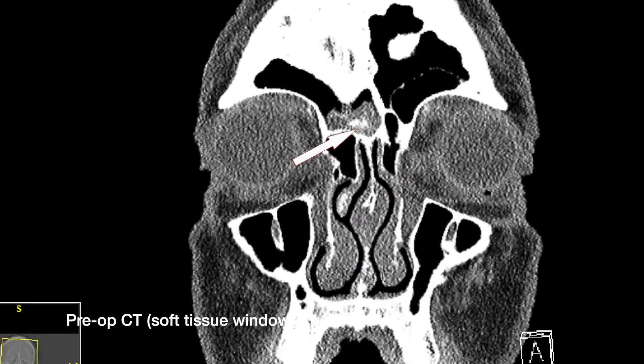Hyperdensities in fungus balls are a result of iron, magnesium, and manganese from the presence of fungal elements. The fungus accumulates in the sinus and often has a secondary outflow obstruction that can lead to bacterial infection.